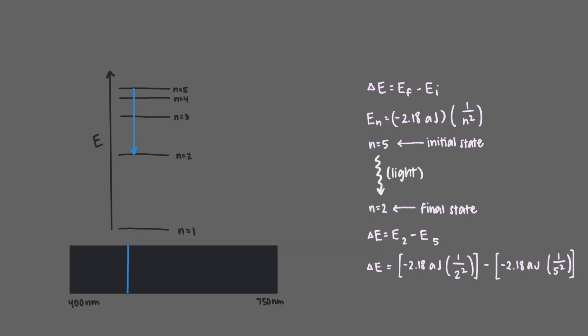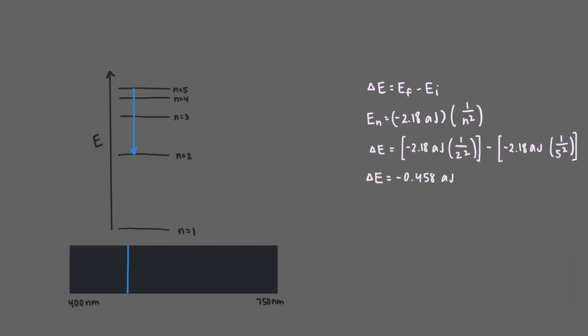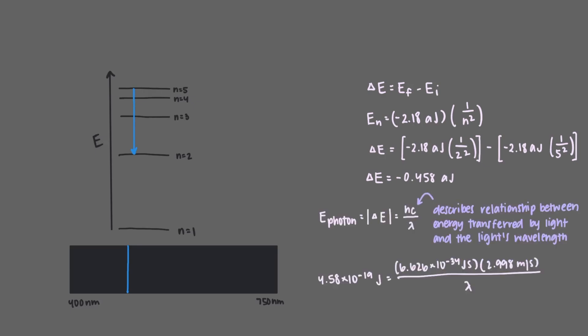By plugging in our numbers, we end up with an answer of 0.458 atajoules, but we can go one step further. To calculate the wavelength of this light, now that we have the energy, we can use the relationship between energy and wavelength. By plugging in the energy in joules, Planck's constant, and the speed of light, our wavelength comes out to be 4.34 times 10 to the minus 7 meters, or 434 nanometers.